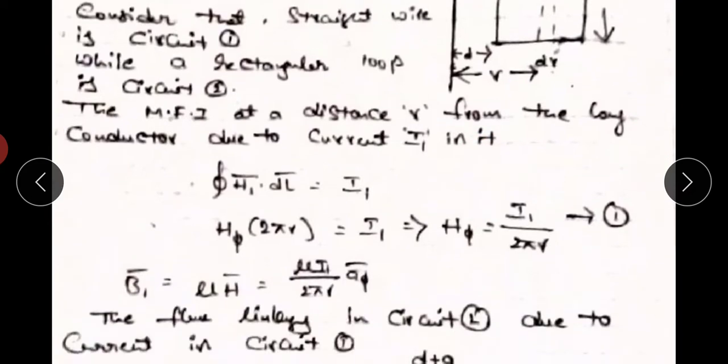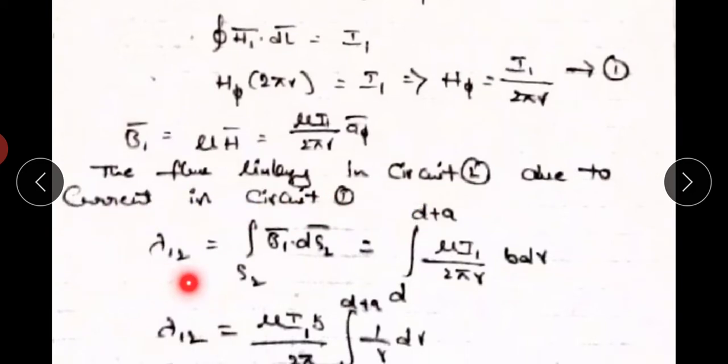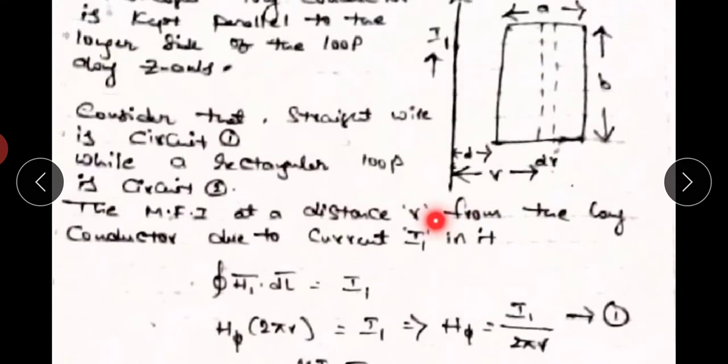The mutual inductance equals flux linkages divided by current. The flux linkages in circuit 2 due to current in circuit 1, λ₁₂, equals the surface integral of B̄₁ · dS̄₂. The integration limits are from R = d to R = d + a, where d is the starting distance from the straight conductor to the loop and a is the width of the loop.